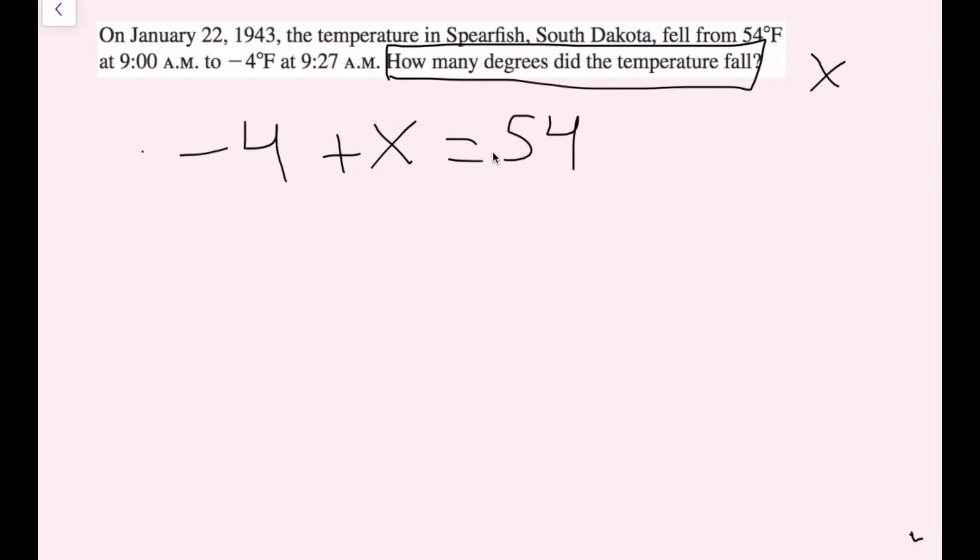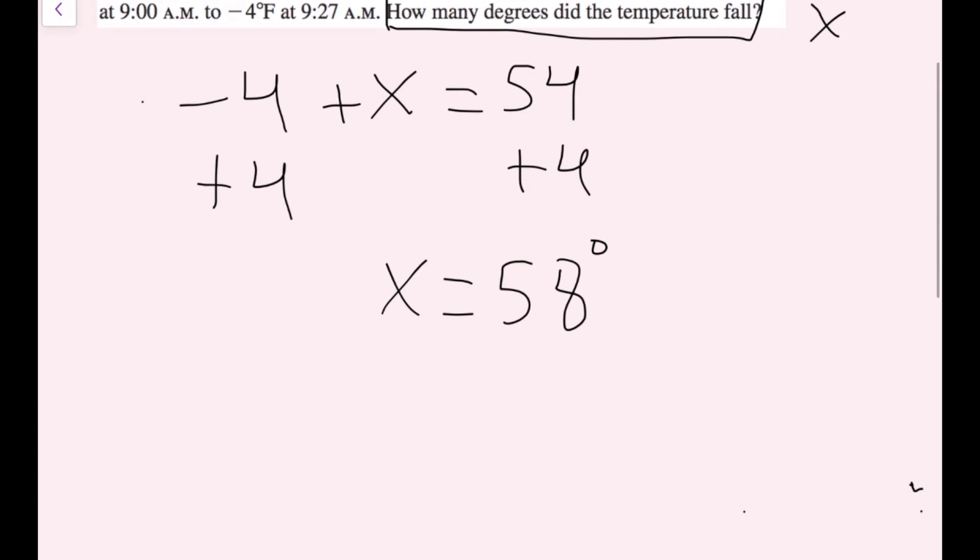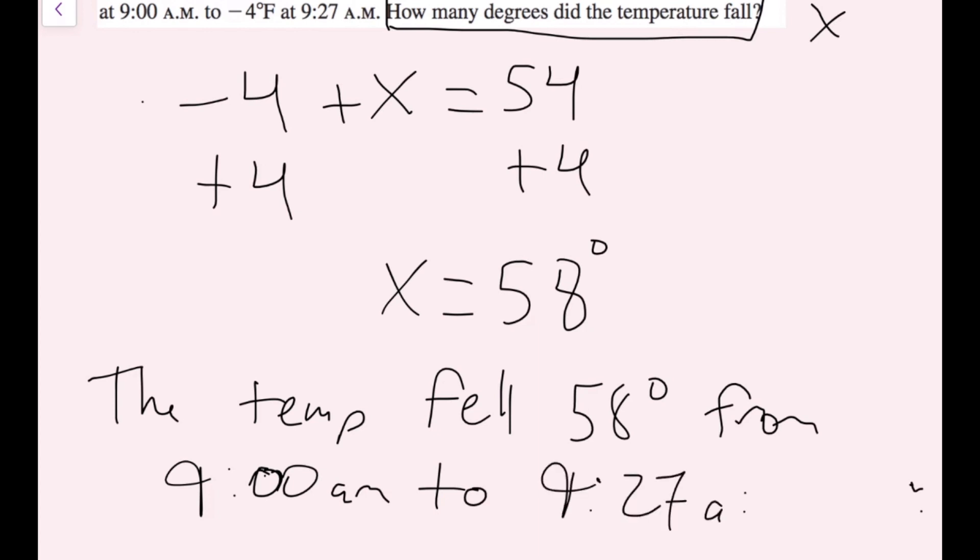Well, now I have negative four plus x. So to solve for x here, I just want to cancel this negative four. To cancel a negative four, all I have to do is add four. But I need to do that on both sides to keep the equation true. So I get x equals 58 degrees. So once again, this is a word problem. So I'm going to say the temp fell 58 degrees from 9 a.m. to 9:27 a.m. And now we are done. Sorry for the mess. My handwriting is not the best.